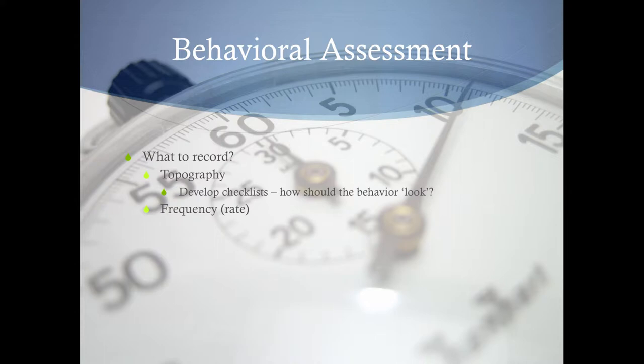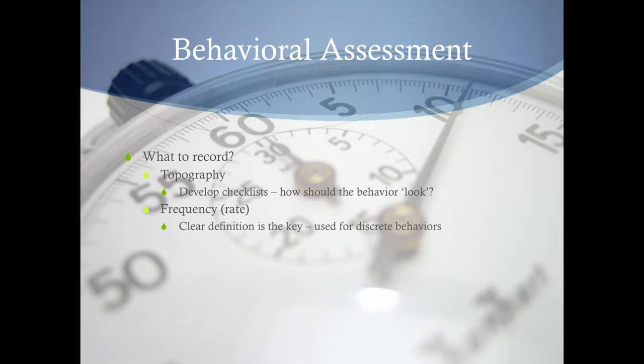A clear definition is key - we need to use frequency for discrete behaviors. How many words is someone going to say in a one-minute period? That's a clear definition. Discrete behavior is something that has a clear beginning and end - a word is discrete, a laugh is discrete. Crying, on the other hand - one behavior can last for hours - that's not discrete.